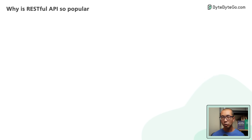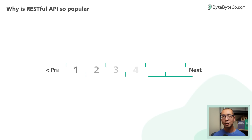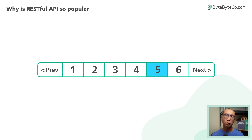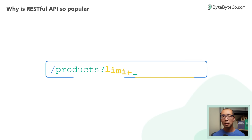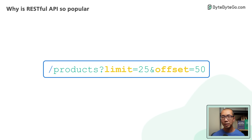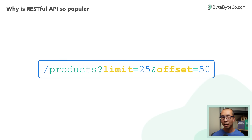There are two final points to round out a well-behaved RESTful API. If an API endpoint returns a huge amount of data, use pagination. A common pagination scheme uses limit and offset as parameters. If they are not specified, the server should assume sensible default values.